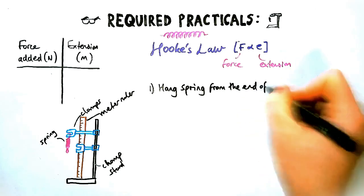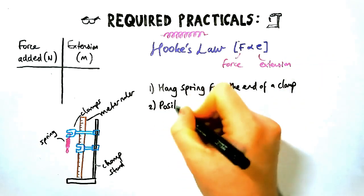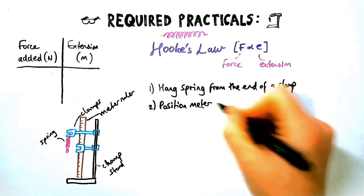So how to write the method? Well, first things first, hang the spring from the end of the clamp. Stating the obvious, you've got to state the obvious sometimes to get marks.